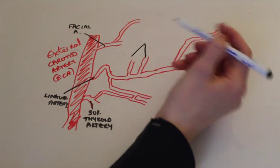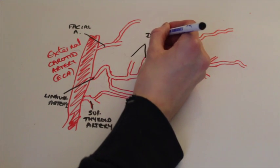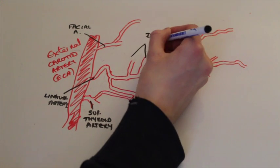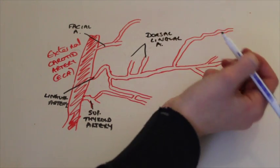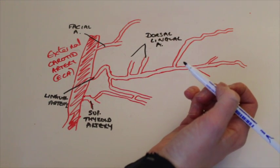One of the main branches that comes off the lingual artery is the dorsal lingual artery. It provides blood supply to the root of the tongue and it also gives a branch which goes to the palatine tonsil.